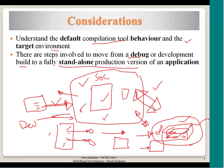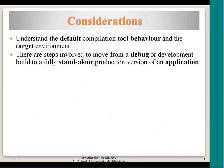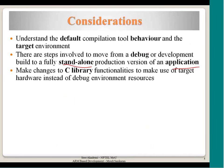There will be minor changes between the debug version and the development build. The development build is for standalone running — when it is running on a set-top box, it will not be connected to another PC and no developer will be sitting beside it. It should work at the customer's premises without any debugger or PC connected. Some changes to C library functionality must also be made to meet target hardware requirements — for example, if printf output cannot go to a serial port in standalone mode, it must use all hardware resources on the target.